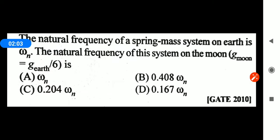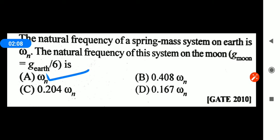So the natural frequency on Earth is the same as on the moon. The answer is option A: omega_n.